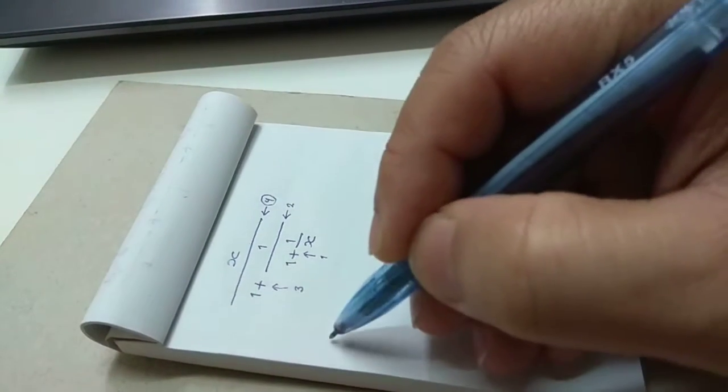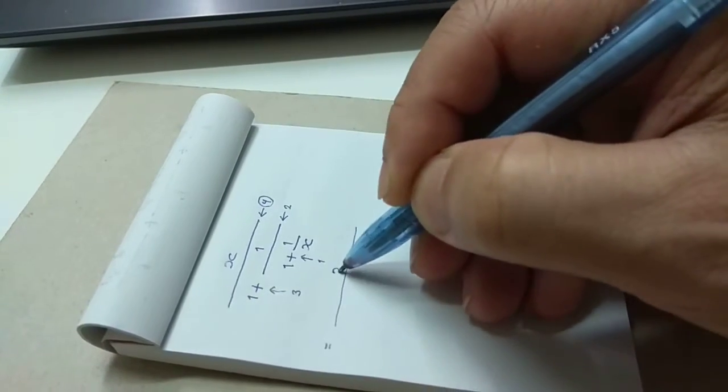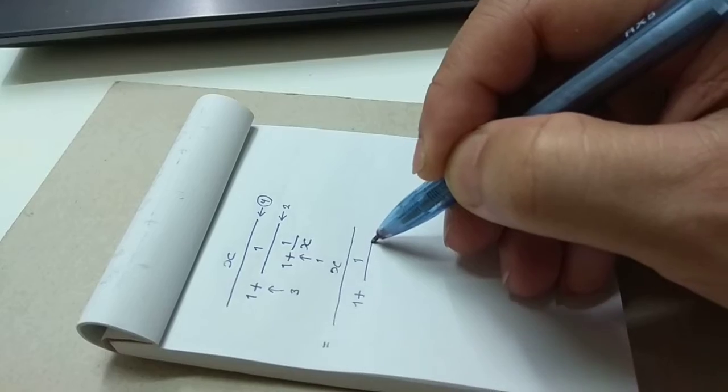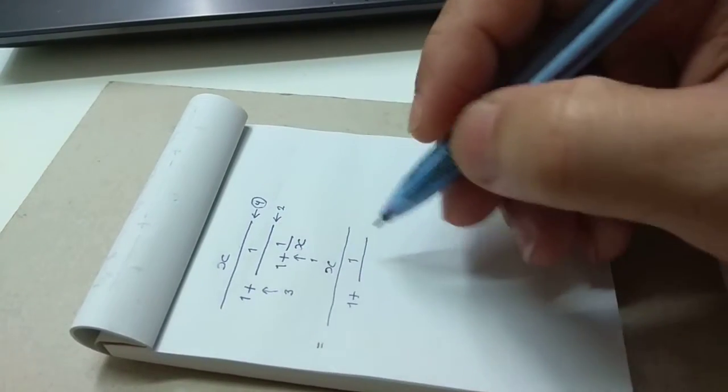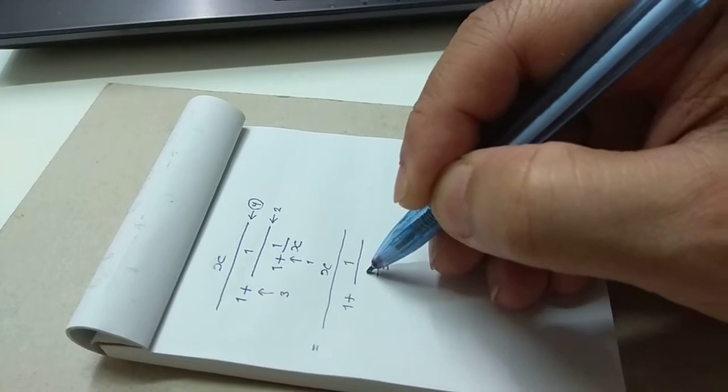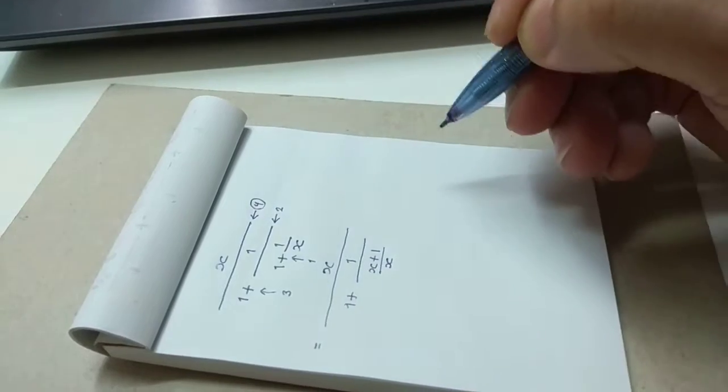Okay, operation 1. So, 1 plus 1 over x is common denominator x. 1 becomes x by x. 1 over x is 1 over x.